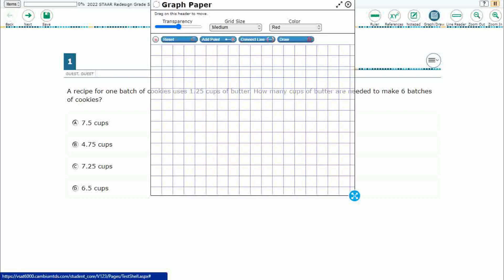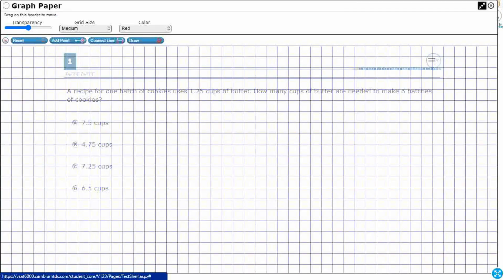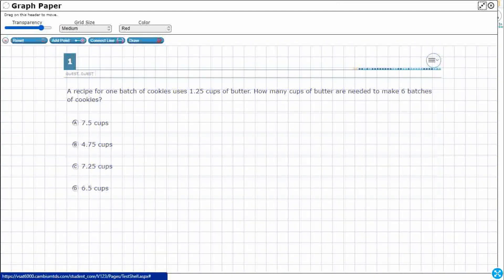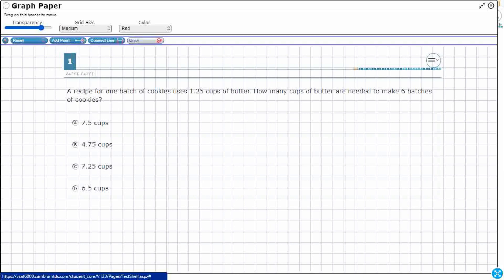Alright, so we're gonna use our graph draw feature. Actually a few different ways we can solve this. So did you know we can actually solve this without any type of multiplication? Because look at what we have here. We've got one batch of cookies is 1.25 and we need six batches.